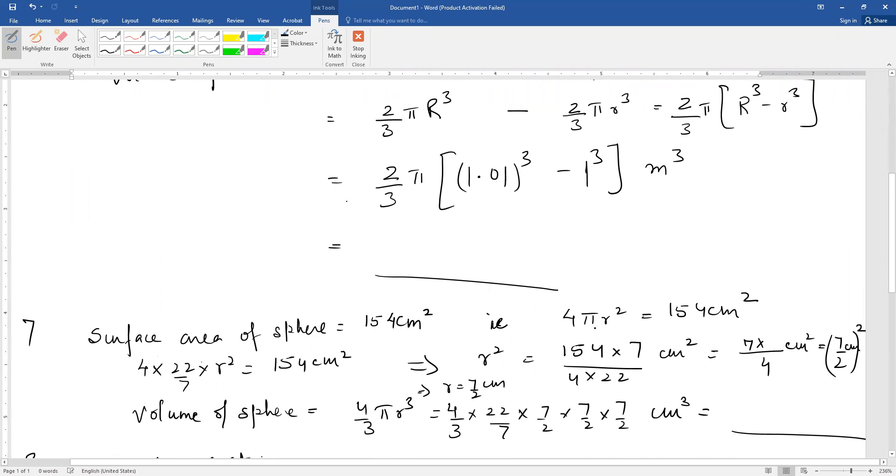You should remember the surface area formula. 4π r² is the surface area, which equals 154 cm². From this formula calculate the radius yourself. Radius will be 7/2 cm.